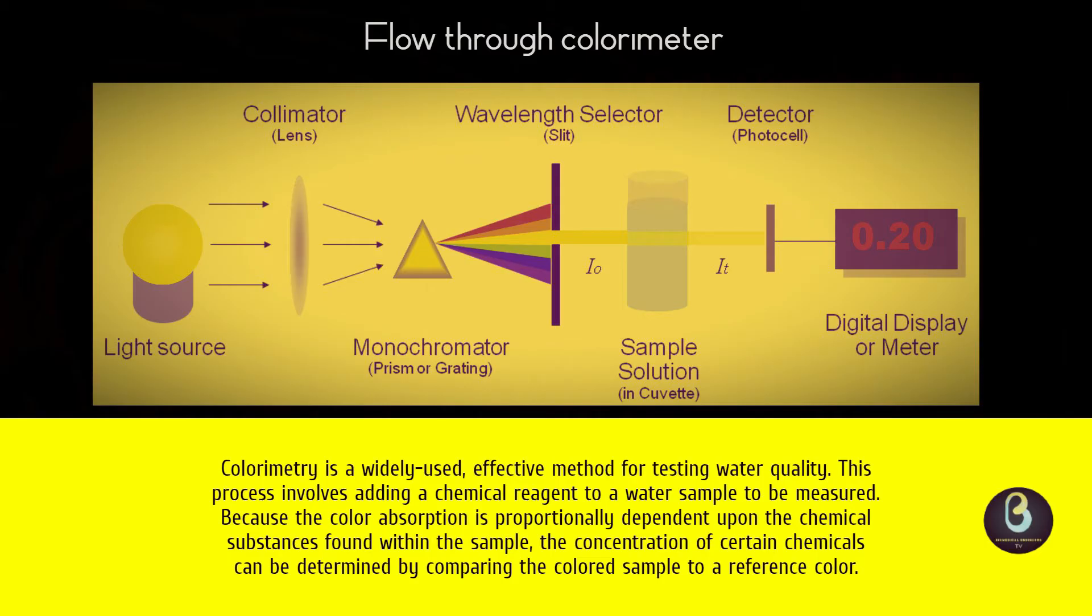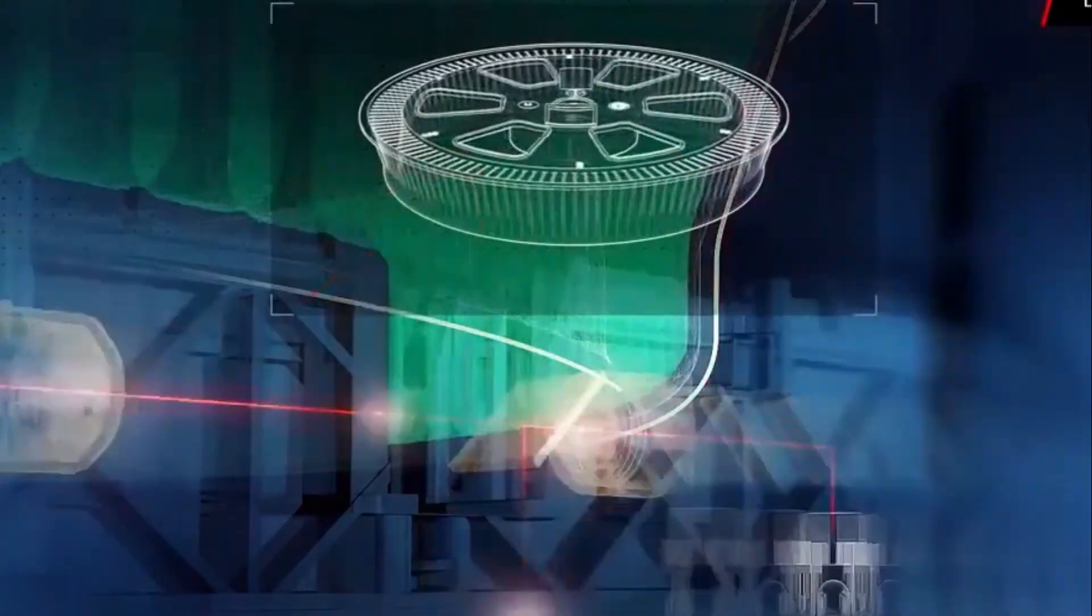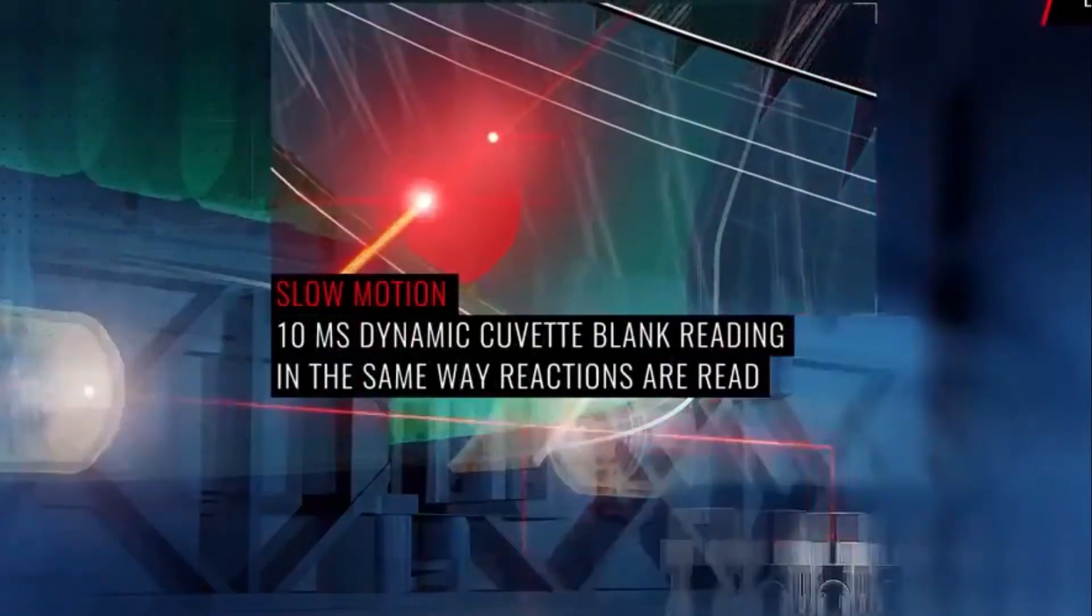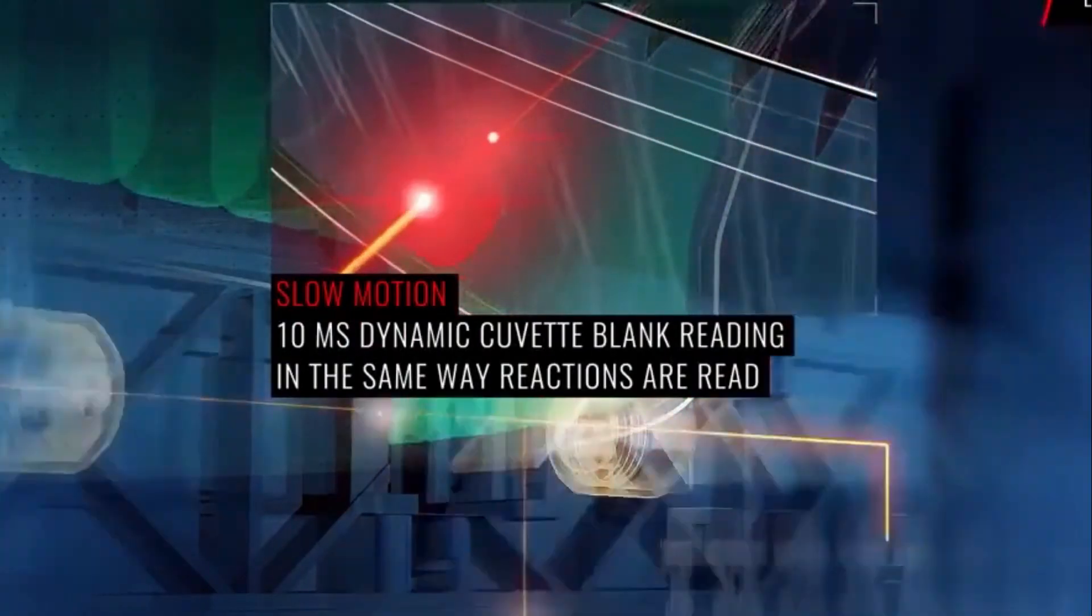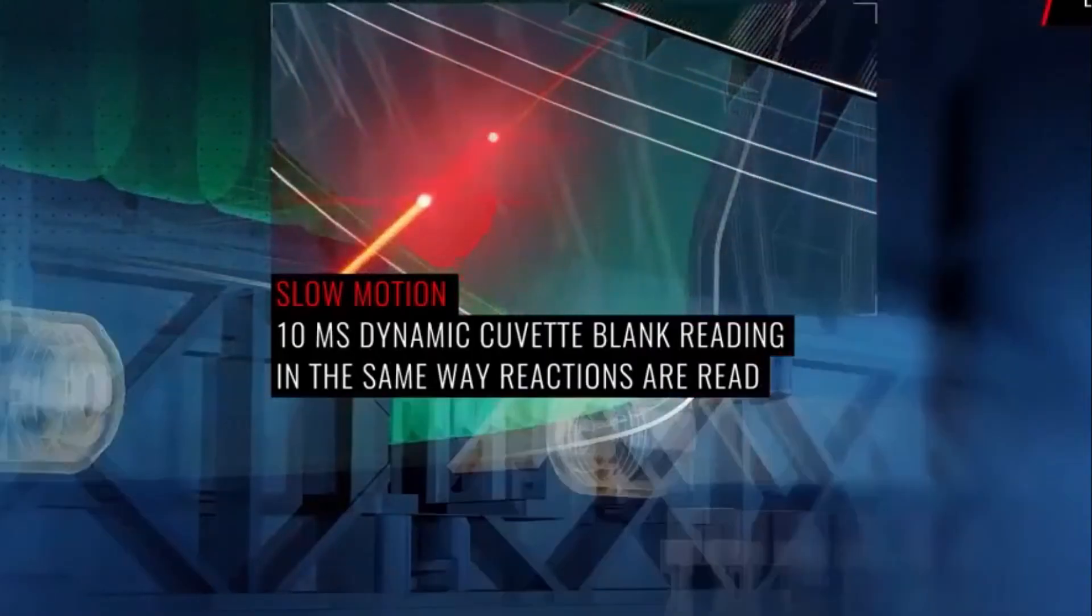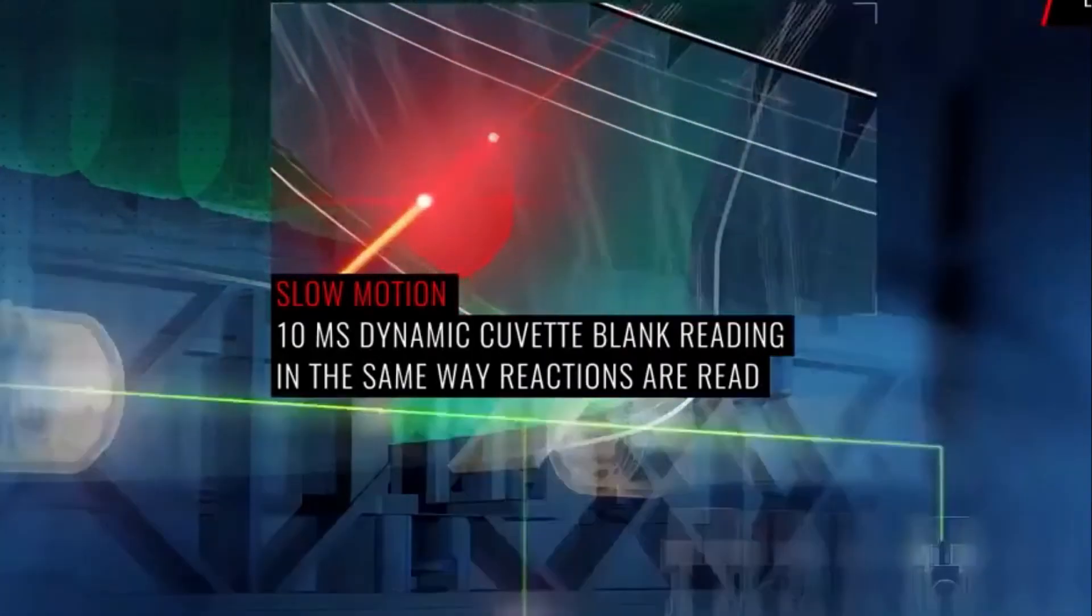And last but not the least component is the recorder assembly. The servo-potentiometer recorder is used to record the ratio of the responses from the two detectors and these responses are proportional to the intensity of light reaching the detectors and to send it to the CPU for analyzing data and display the results on the device.